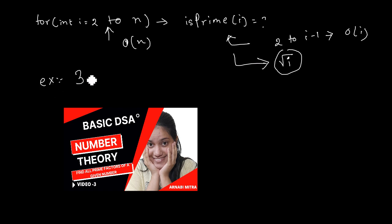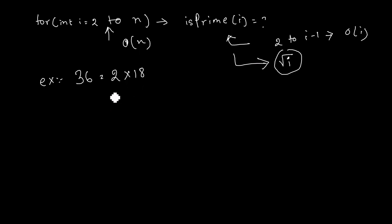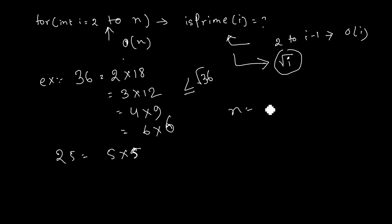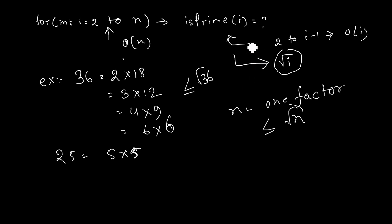For example, 36 can be factored as 4×9 or 6×6, so within √36 there will be at least one divisor. For 25, the only divisor is 5, which equals √25. So for any number n, there will be one factor less than or equal to √n. Within O(√n) we can determine if a number is prime, making the brute force overall O(n√n).